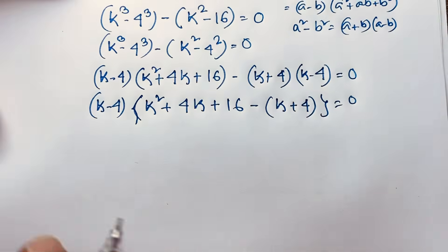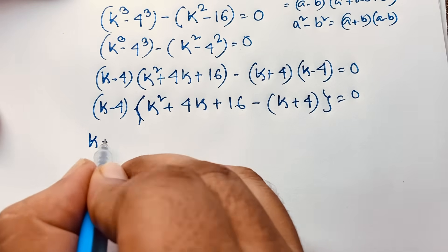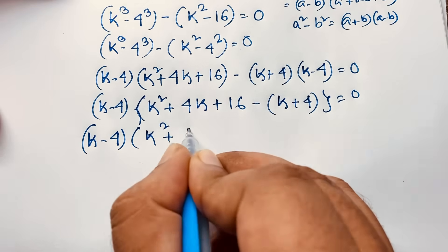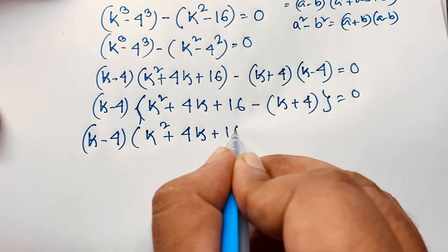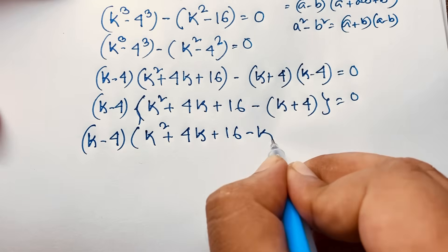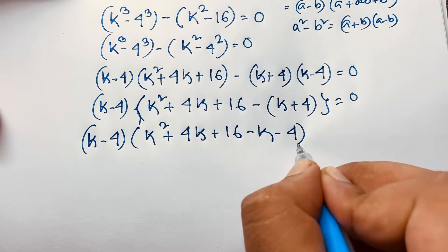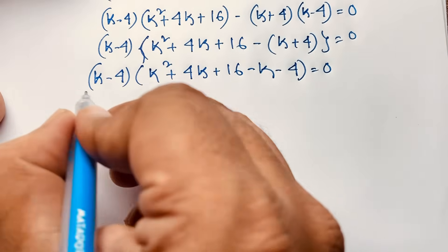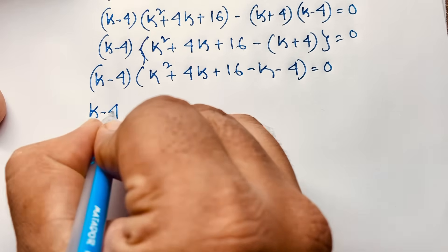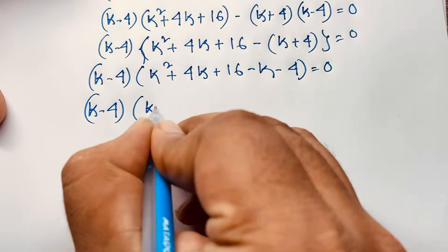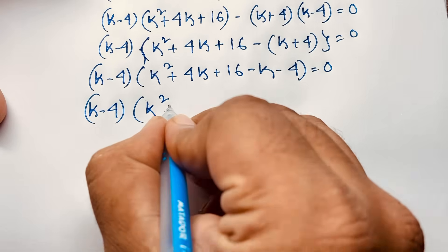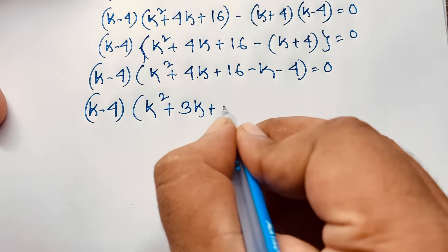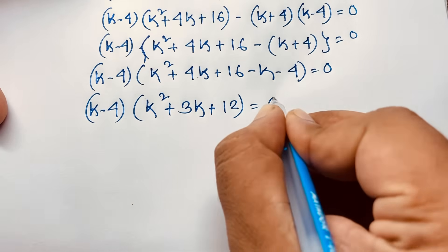Now, k minus 4 is common in both terms, so I factor it out. Dividing through, we get k minus 4 times the quantity k squared plus 4k plus 16 minus k plus 4, which simplifies to k minus 4 times k squared plus 3k plus 12, is equal to 0.